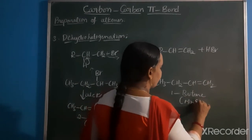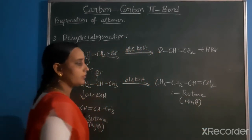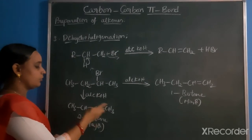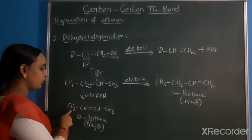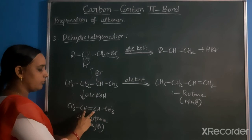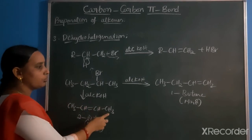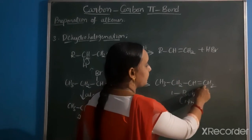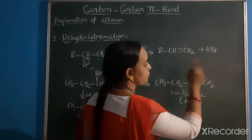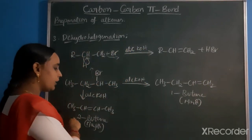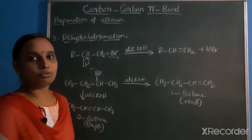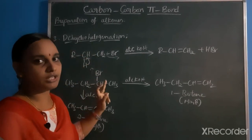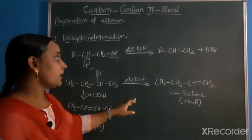According to Saytzeff's rule, the double-bonded carbon with more alkyl groups is more stable. If one product has three alkyl groups attached to the double bond carbons and another has only one alkyl group, the more substituted product is the stable major product. This completes the preparation by dehydrohalogenation.